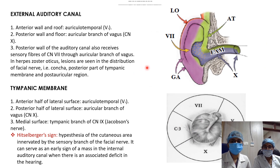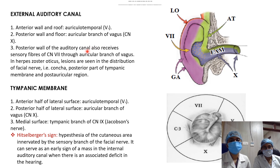Nerve supply of the external auditory canal: the anterior wall and roof are supplied by the auriculotemporal nerve. The posterior wall and floor are supplied by the auricular branch of the vagus nerve. The posterior wall of the canal also receives some fibers from the facial nerve through the auricular branch of the vagus nerve.